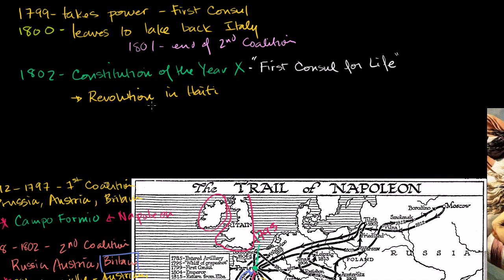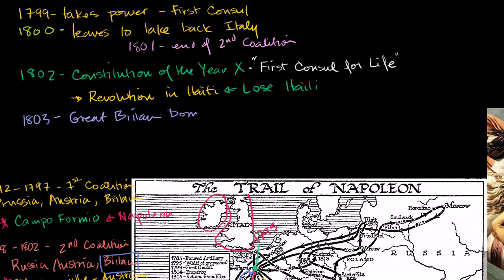Leclerc and the French occupiers get ravaged by yellow fever. Dessalines is a very aggressive general, and France starts losing Haiti. Rochambeau — a hugely brutal figure — takes over after Leclerc. And at the same time, entering into 1803, Napoleon begins to realize that Great Britain controls the seas. So with Great Britain having the dominant navy and France losing Haiti — their main profit center — Napoleon essentially gives up on North America.